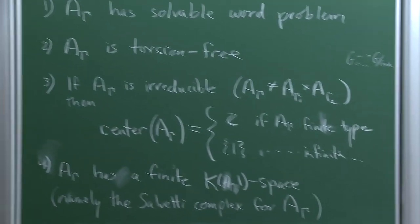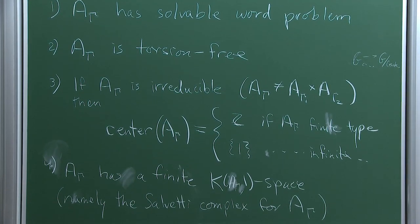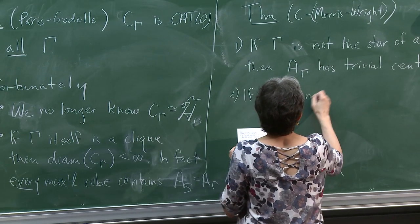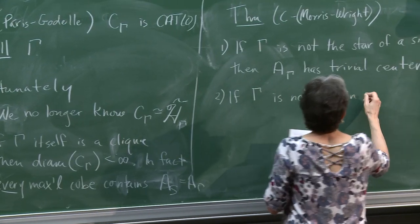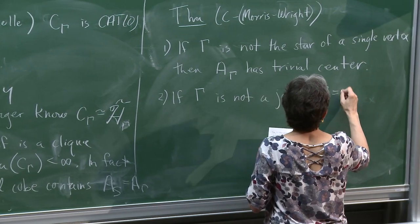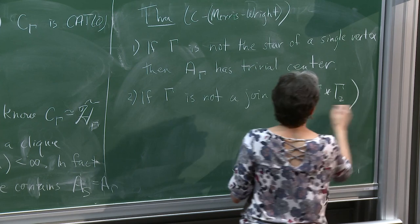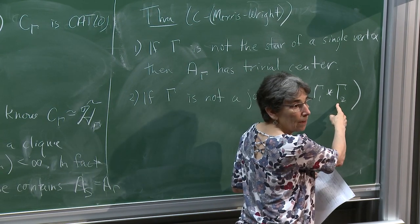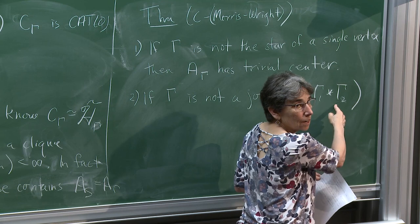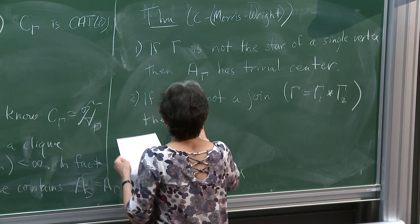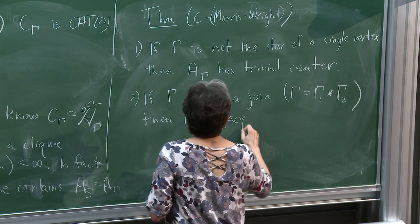Conjecture 3 holds under reasonable conditions. And two: if γ is not a join — meaning there are no two subgraphs γ₁, γ₂ such that every vertex in γ₁ is connected to every vertex in γ₂ — then A(γ) is acylindrically hyperbolic.